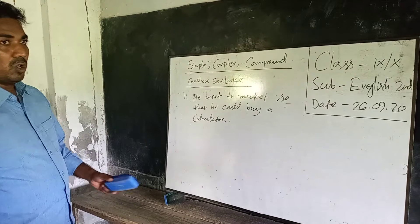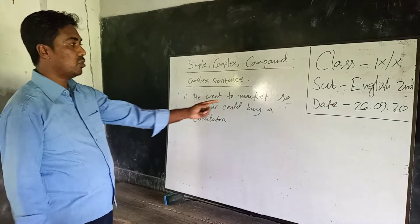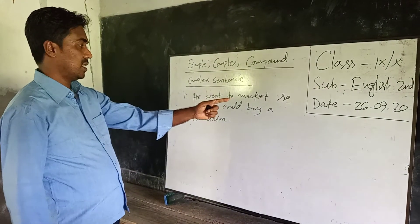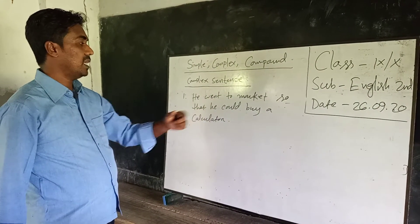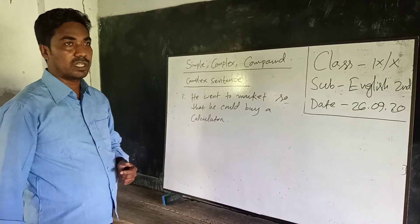For example, this is a complex sentence: 'He went to market so that he could buy a calculator.' Here, 'so that' is a subordinating conjunction joining the independent and dependent clauses.